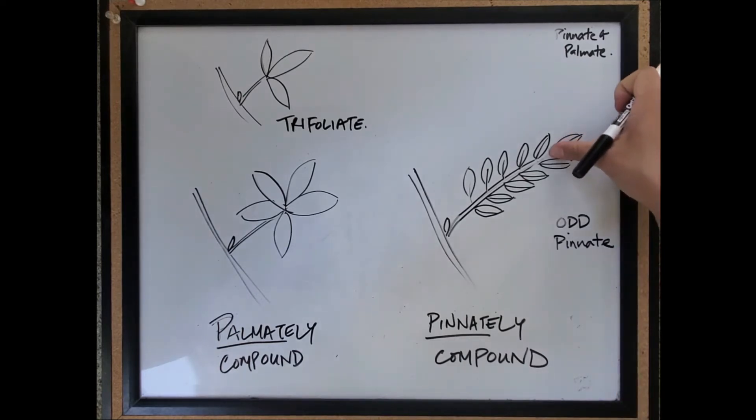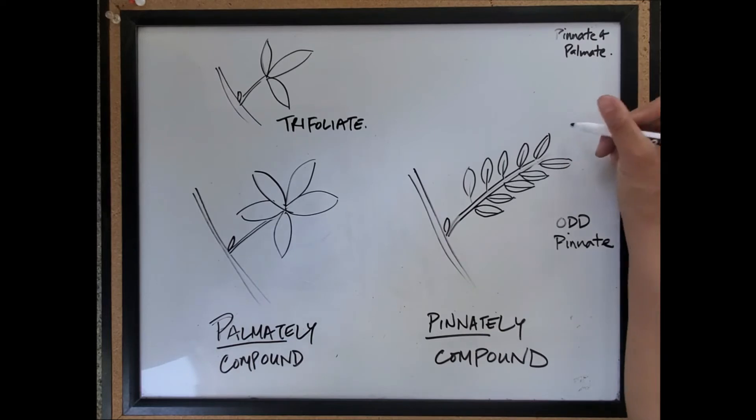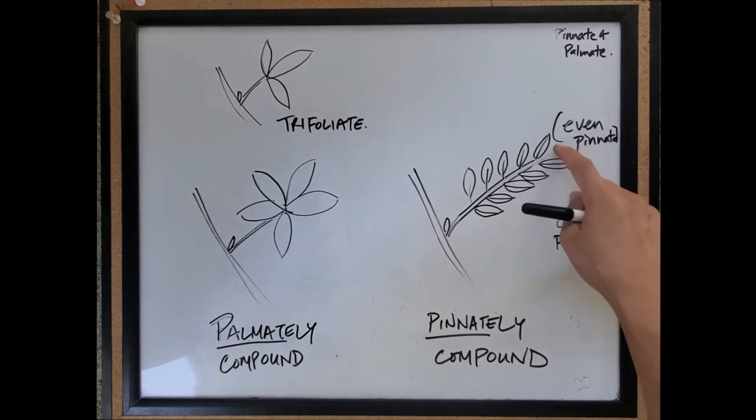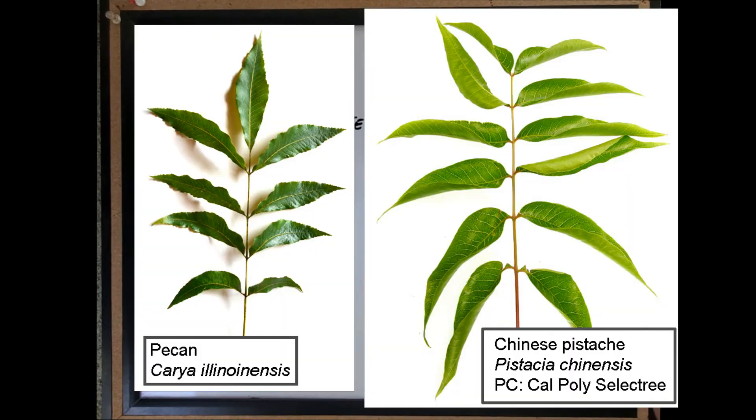But if you didn't have this terminal leaflet, then you would call that an even pinnate. So that just refers to the number of leaflets you have. This is actually very helpful. If you haven't seen the Chinese pistache before and you look at the leaves, you can see that it's actually missing this terminal leaflet. That helps you separate it from something that might look similar, maybe an ash tree.